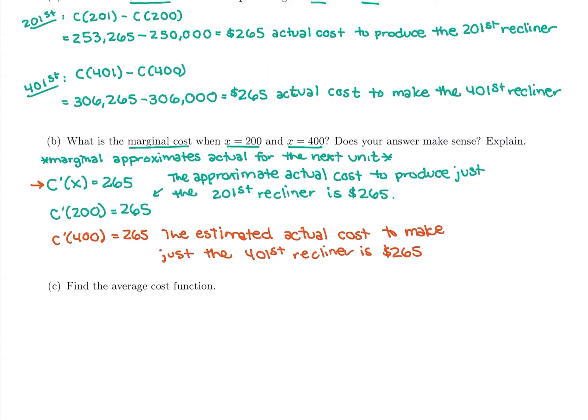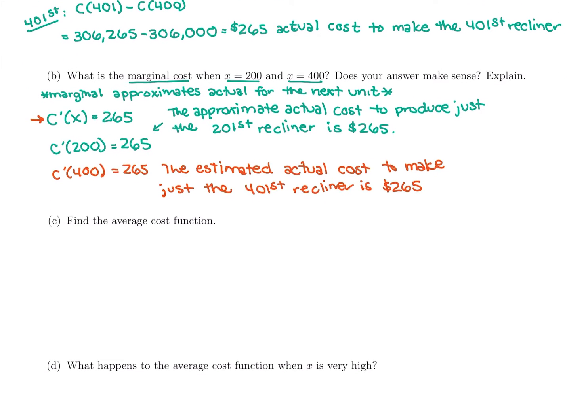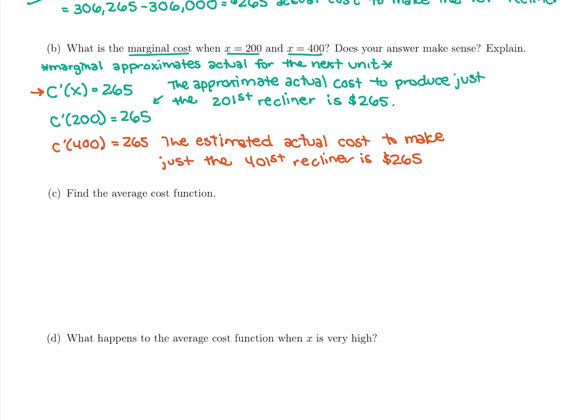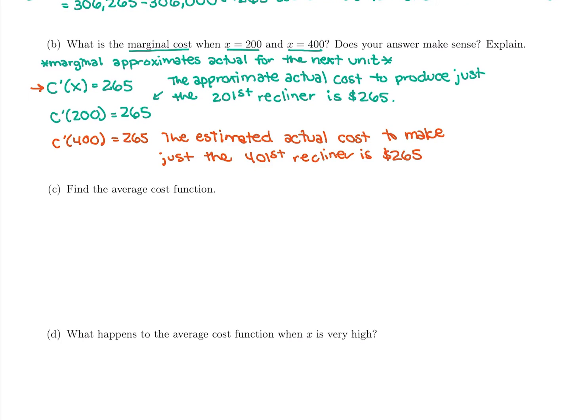So there's some marginal analysis, plug into actual cost and then marginal cost, seeing that marginal does the same thing as actual, it just does it a lot faster. So it's a nice tool to have. Now we're going to switch gears to average cost.